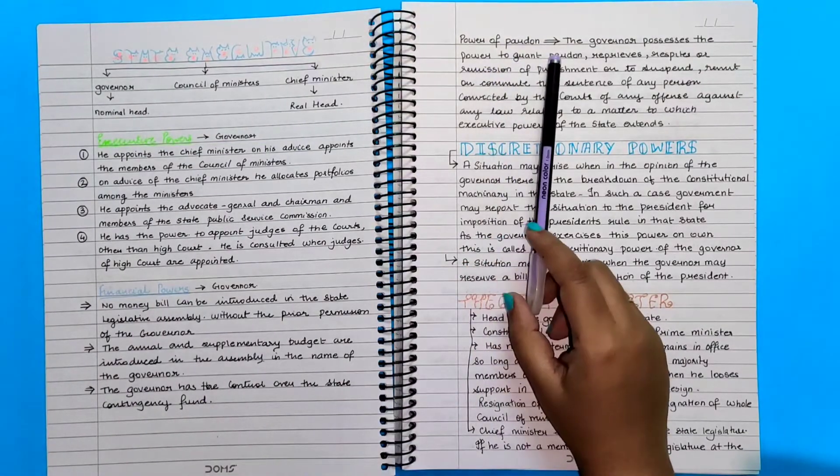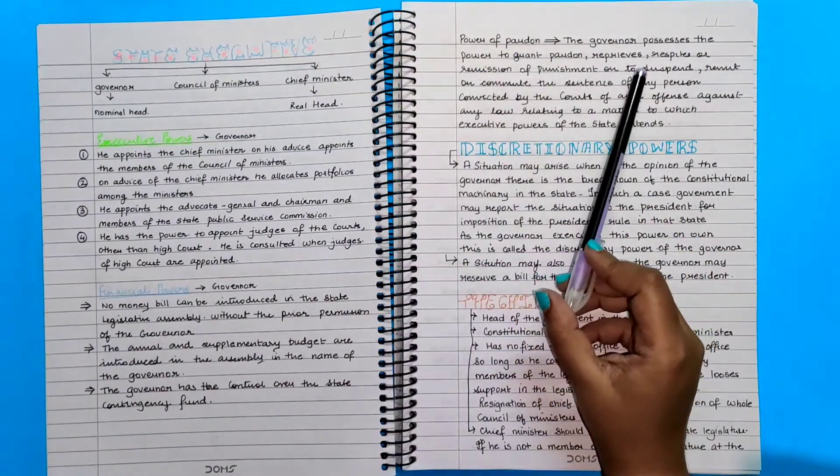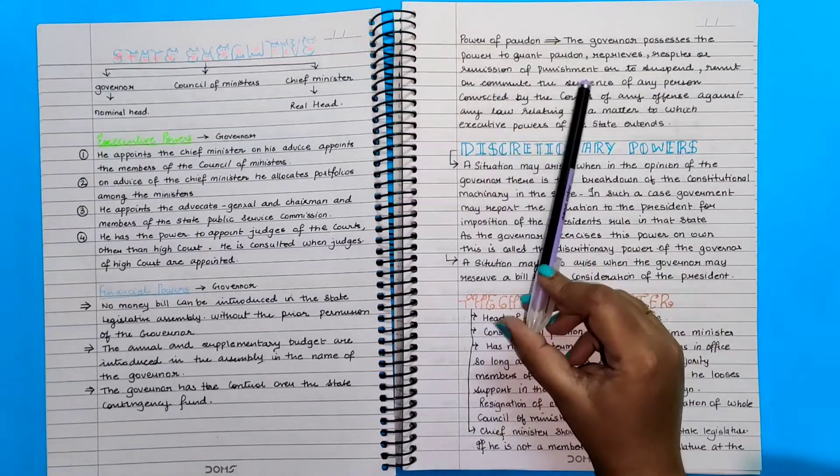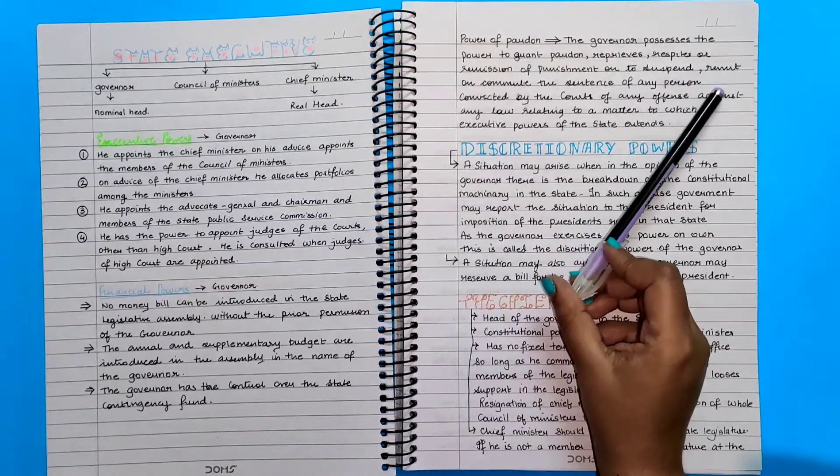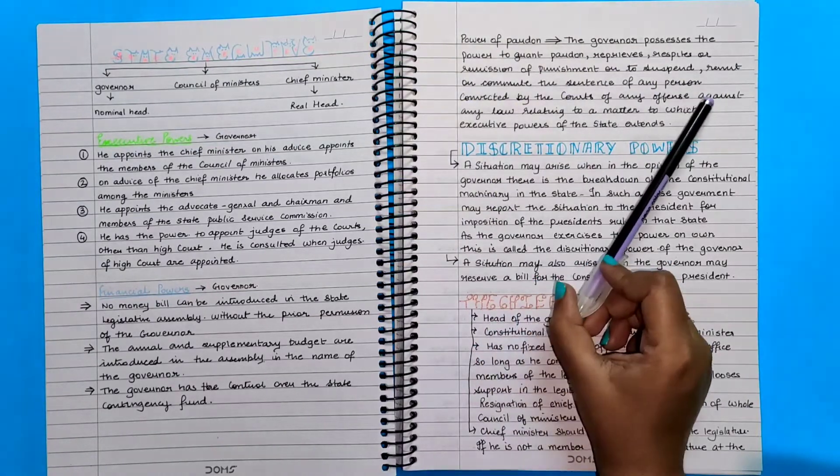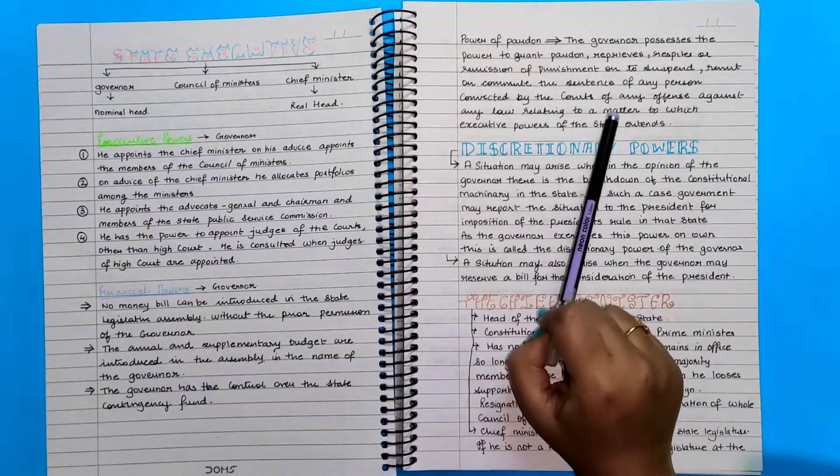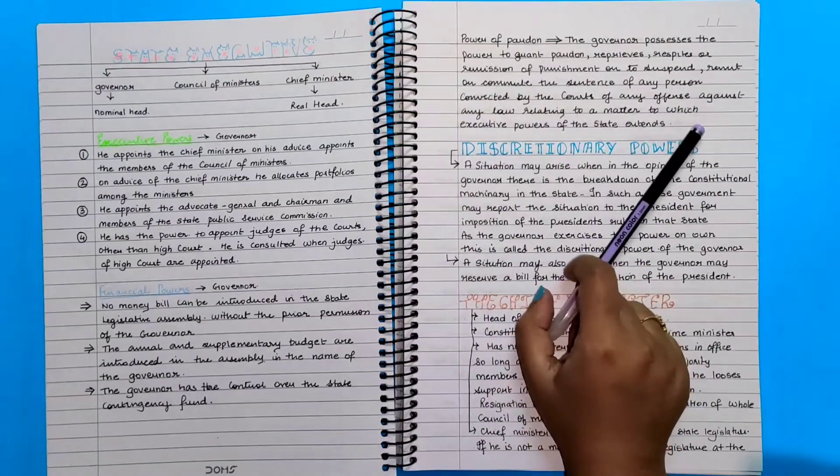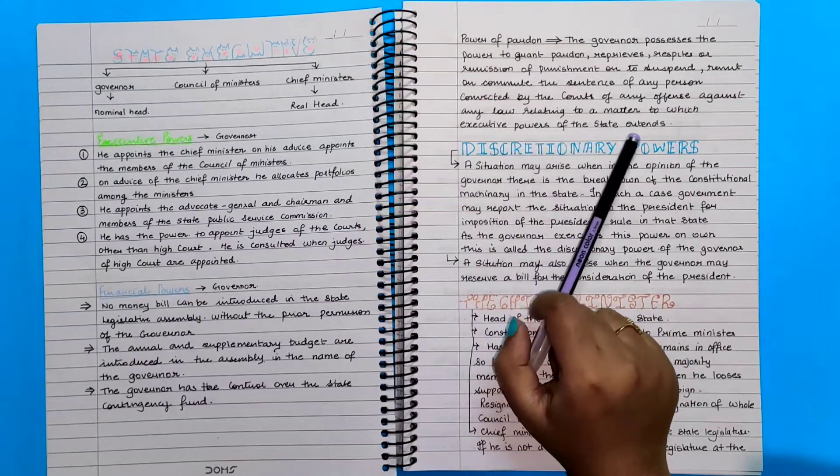Power of pardon: The governor possesses the power to grant pardon, reprieves, respites or remission of punishment or to suspend, remit or commute the sentence of any person convicted by the court of any offence against any law relating to matter to which executive powers of the state exist.